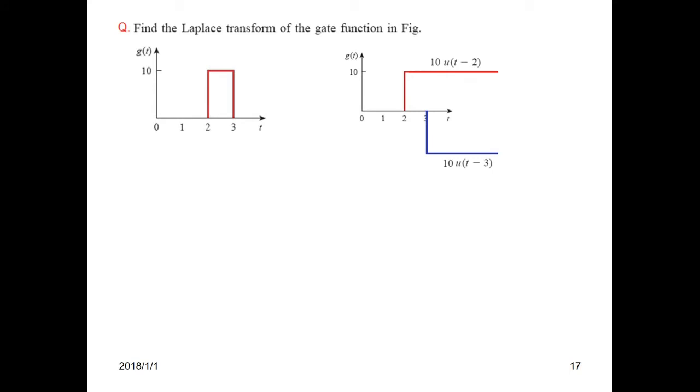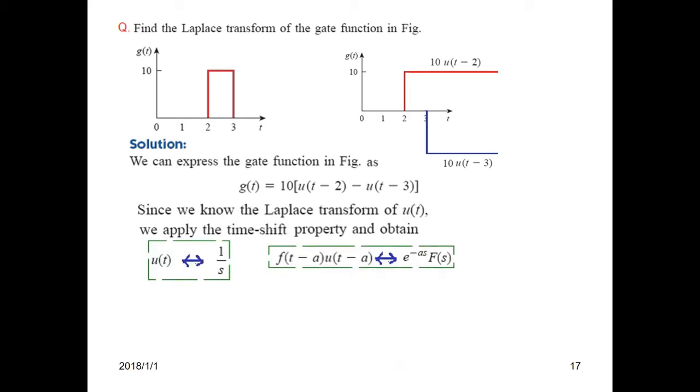there is the form of u shifted, we can find the Laplace transform. Mathematically, we define the gate function as g(t) = 10[u(t-2) - u(t-3)], taking 10 common. Now we are using the